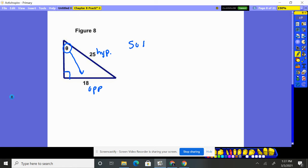So I say some old hippie caught another hippie tripping on acid. So who has O and H in it? O and H is the sign. So the sign of our unknown angle is equal to the opposite over the hypotenuse, 18 25ths.